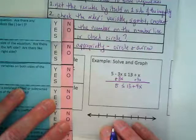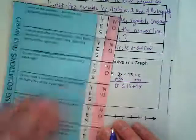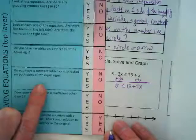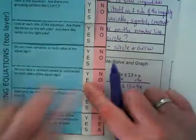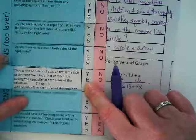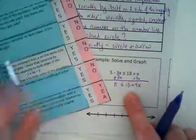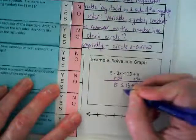And then what? Do you have a constant added or subtracted on both sides of the equal sign? Yes. What do we do? Choose the constant on the same side as the variable. So let's subtract the 13.